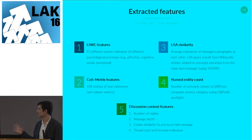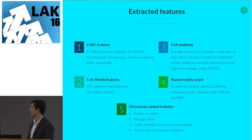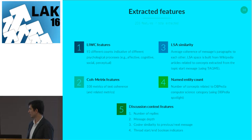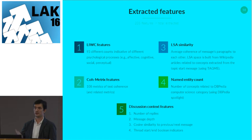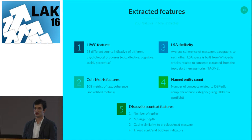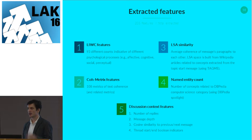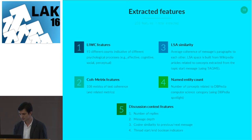We also used contextual discussion features: how many replies a given message received, where in the thread the message is positioned, its similarity to the previous and next message, and a Boolean indicator of whether it's the first or last message. In total we had 205 features.